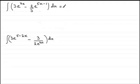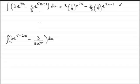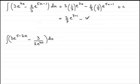For the first problem: we have the constant 3 multiplied by (1/7)e to the power 7x — bringing the 7 down gives one seventh. For the next term, minus two-thirds, we use the a value of 5 to get (2/3) times (1/5), giving two-fifteenths. So the answer is three-sevenths e to the power 7x minus two-fifteenths e to the power 5x minus 1, plus c.